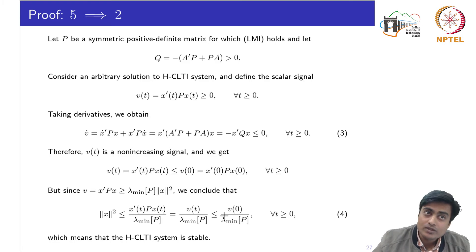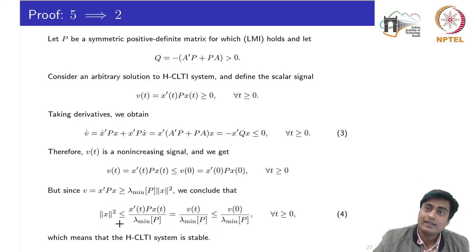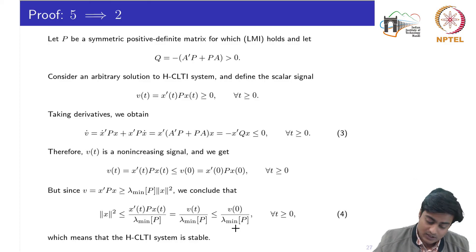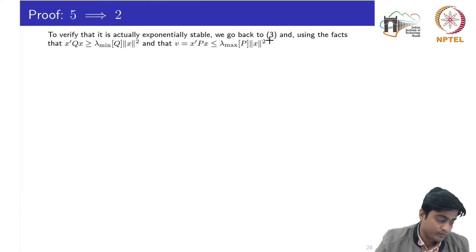This only proves that the system is stable — it does not yet prove asymptotic stability. For stability, the norm must remain bounded, which has been shown. But we still need to show it is bounded by an exponential, which defines exponential stability. To verify exponential stability, we go back to relationship 3.